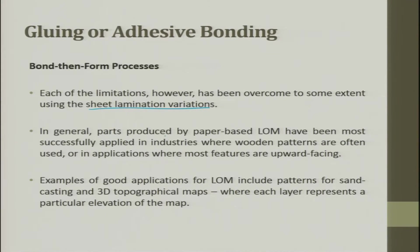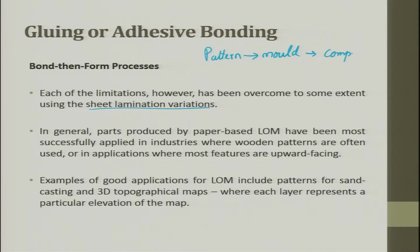Each limitation has been overcome to some extent using sheet laminate variations. Parts produced by paper-based LOM have been most successfully applied in industries where wood patterns are often used. A pattern makes a mold, and a mold makes a component. These patterns initially made from wood are made using LOM. Good applications of LOM include patterns for sand casting and 3D topological maps where each layer represents a particular elevation of the map.